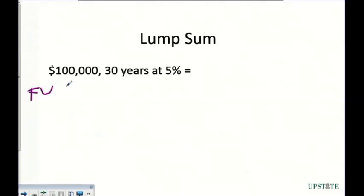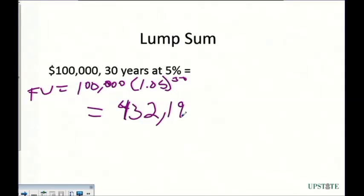If we put all this in, we do the future value is equal to our present value here, multiplied by our 5% interest rate at 30 years. We know that that would end up being worth to us, or at the end, we'd have a lump sum payment of $432,194.